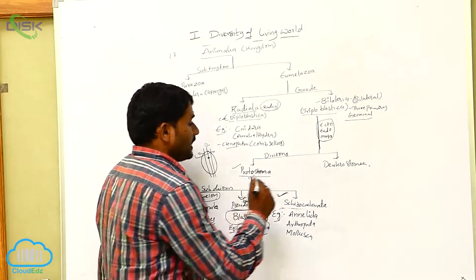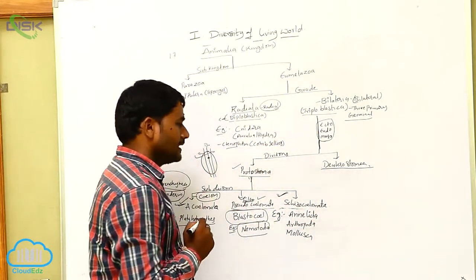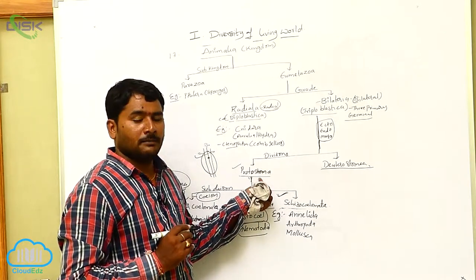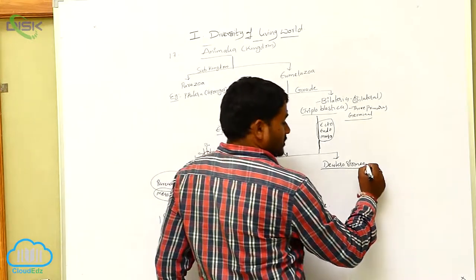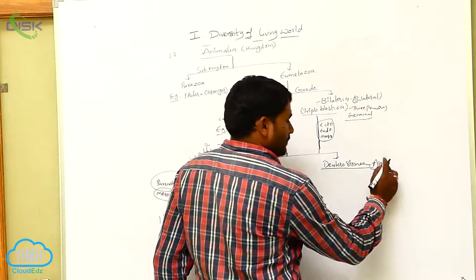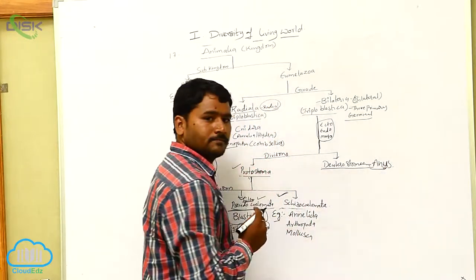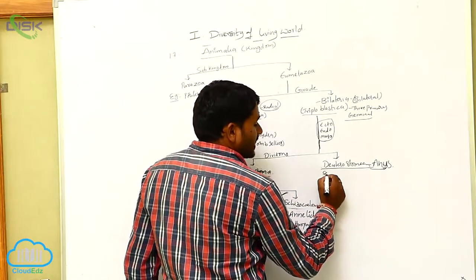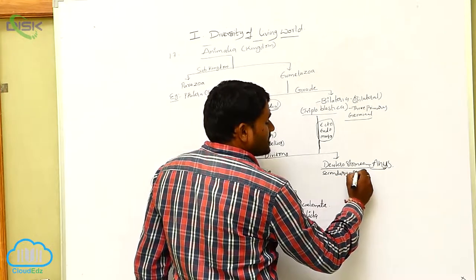Next, let us go for another subdivision: Deuterostomia. Here, 'protos' means first and 'stoma' means mouth, meaning blastopore developed into mouth. But here in Deuterostomia, blastopore develops into anus. 'Deutero' means secondary, 'stoma' means mouth.